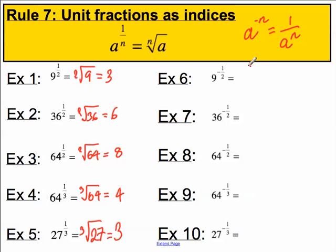So, nine to the minus half must equal one over nine to the power of a half. Well, what is nine to the power of a half? We've done it in example one. It's three. So, the answer to this must be one over three.